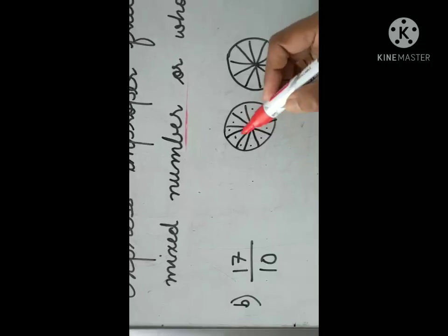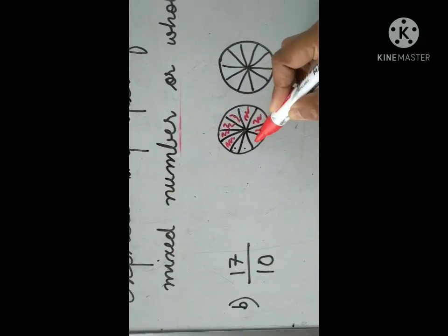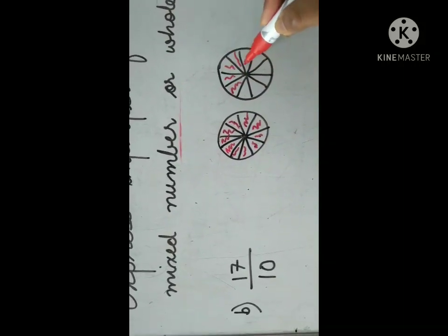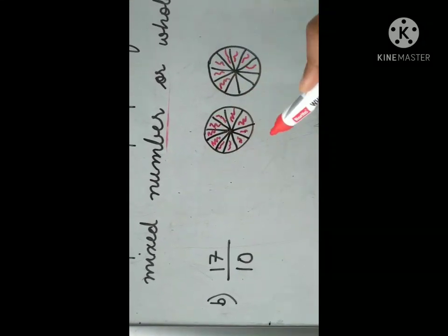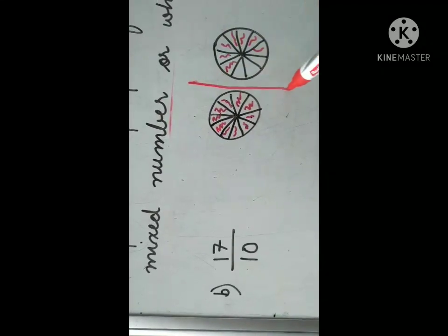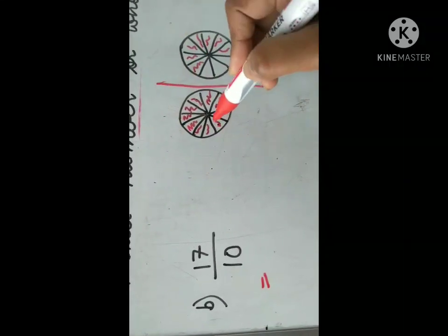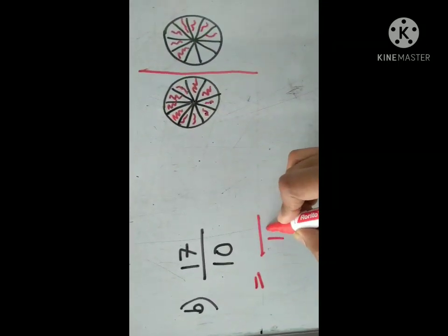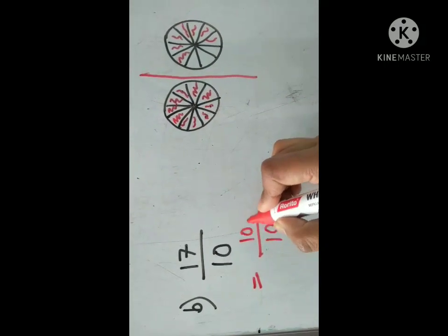Now you need to shade 17 parts. Shade 1, 2, 3, 4, 5, 6, 7, 8, 9, 10, 11, 12, 13, 14, 15, 16, 17. Now this is the whole figure, so draw a line here. We will first consider this one — what will be the denominator? Obviously 10. How many parts are shaded here? All 10 parts.